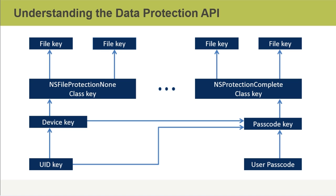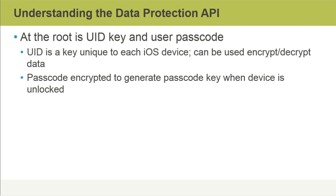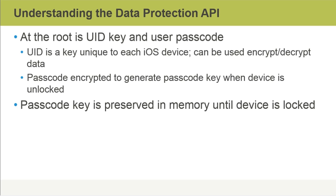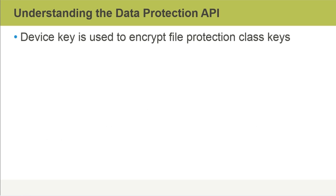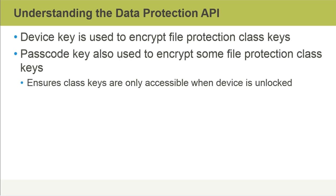Note how the UID key and device key on the bottom left feed into the passcode key on the right. At the root is the UID key and user passcode. The UID is a key unique to each iOS device and can be used to encrypt or decrypt data. The passcode key is encrypted to generate a passcode key when a device is unlocked, and it is preserved in memory until the device is locked. The UID key is used to encrypt a static byte string to generate the device key. The device key is used to encrypt file protection class keys, and the passcode key is also used to encrypt some of the file protection class keys. This ensures that class keys are only accessible when a device is unlocked, ensuring an important layer of security for iOS devices.